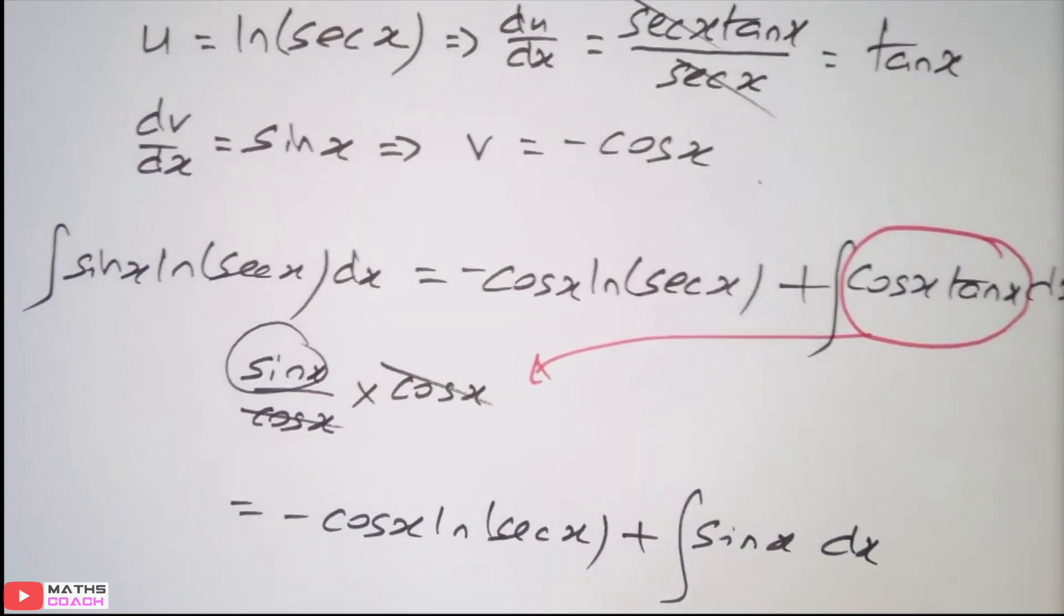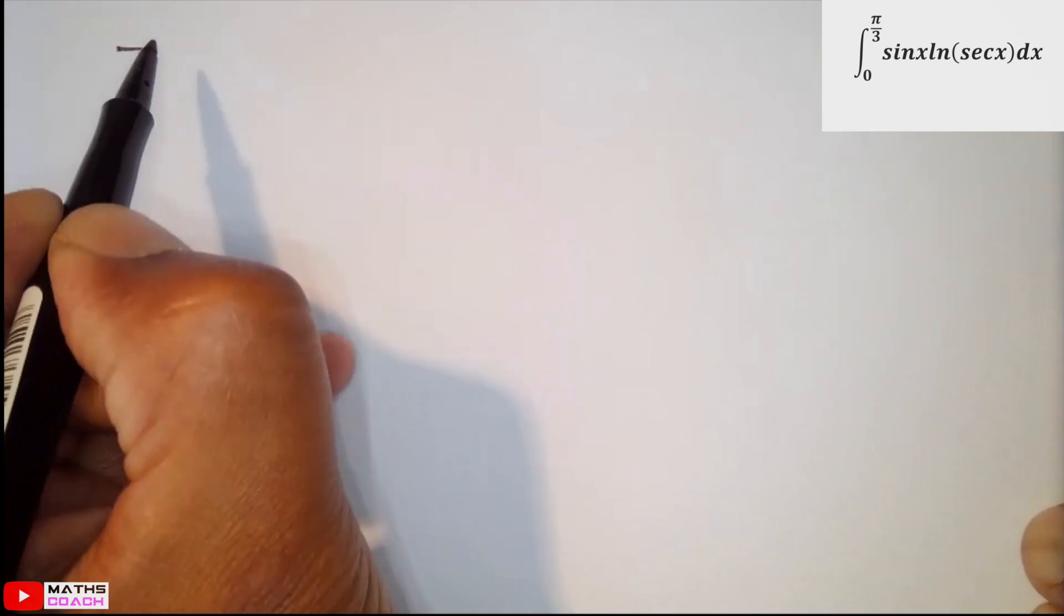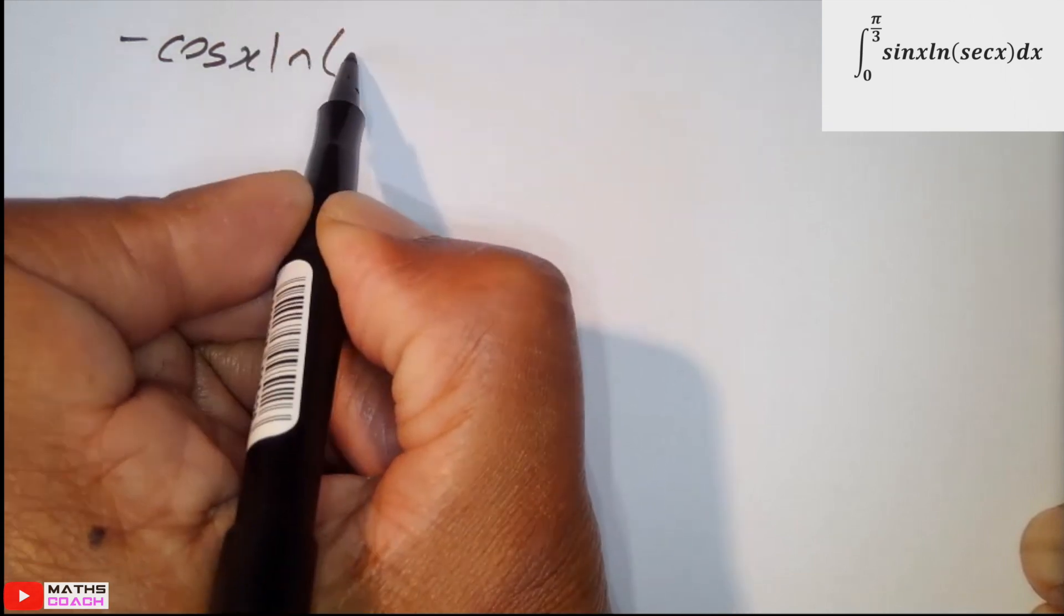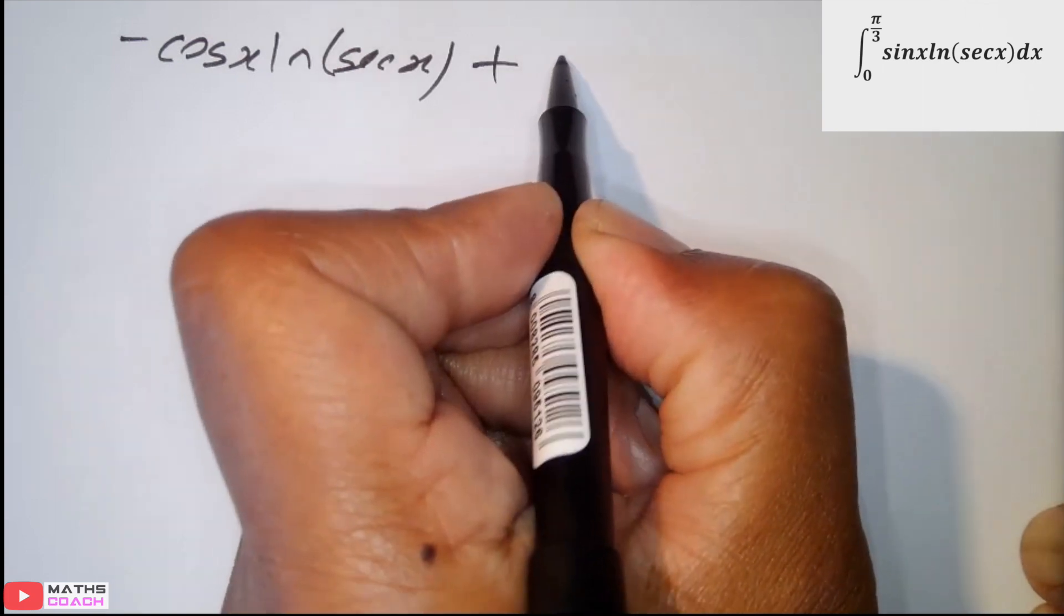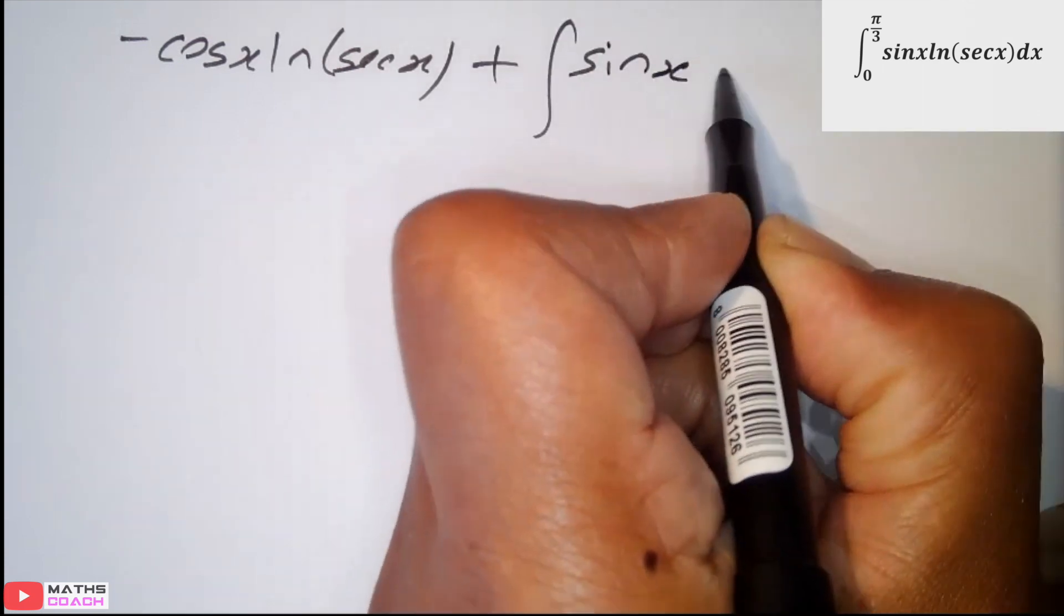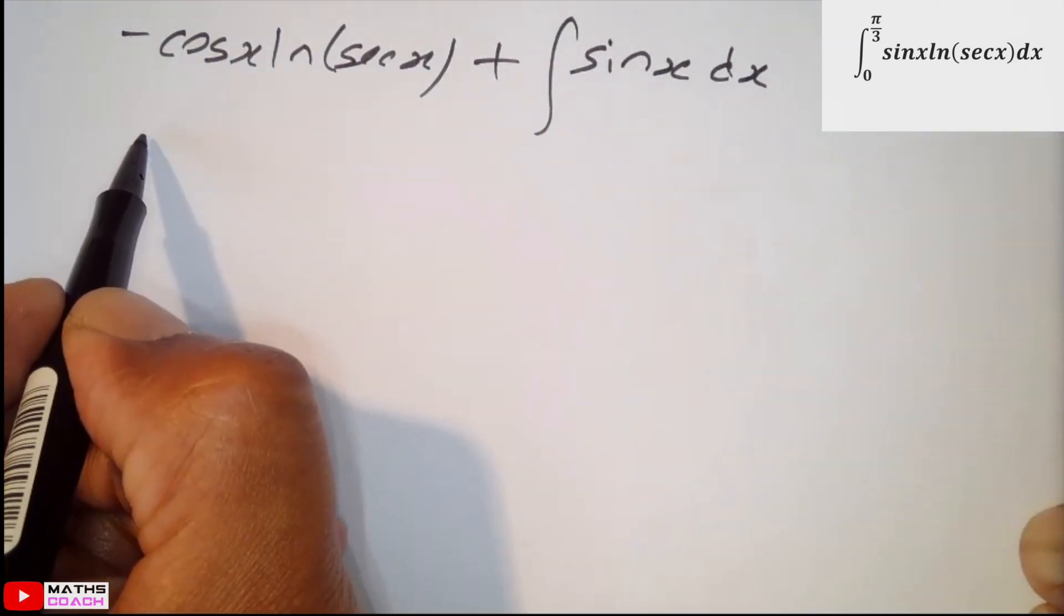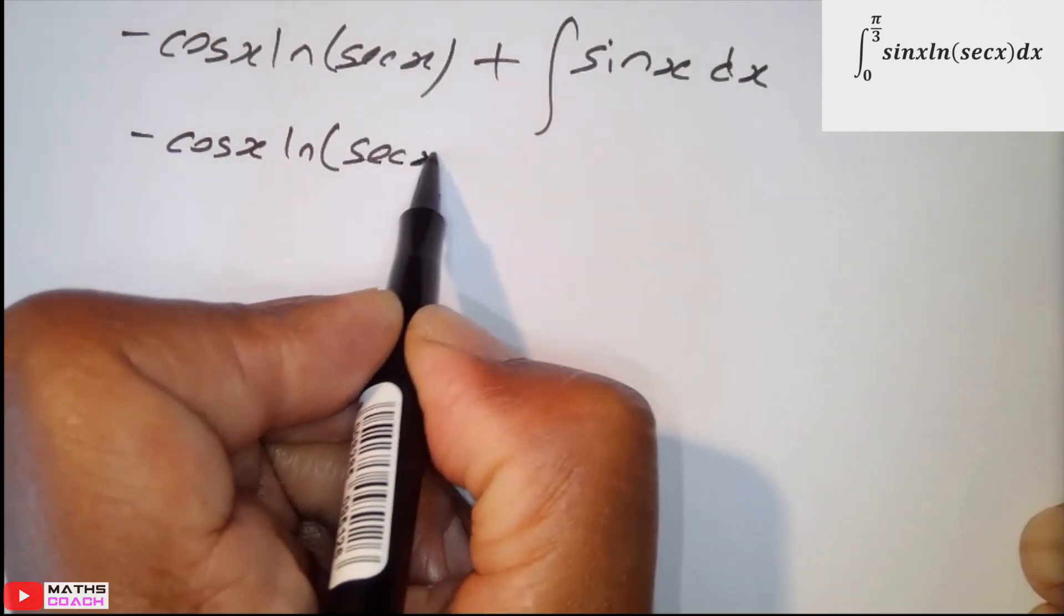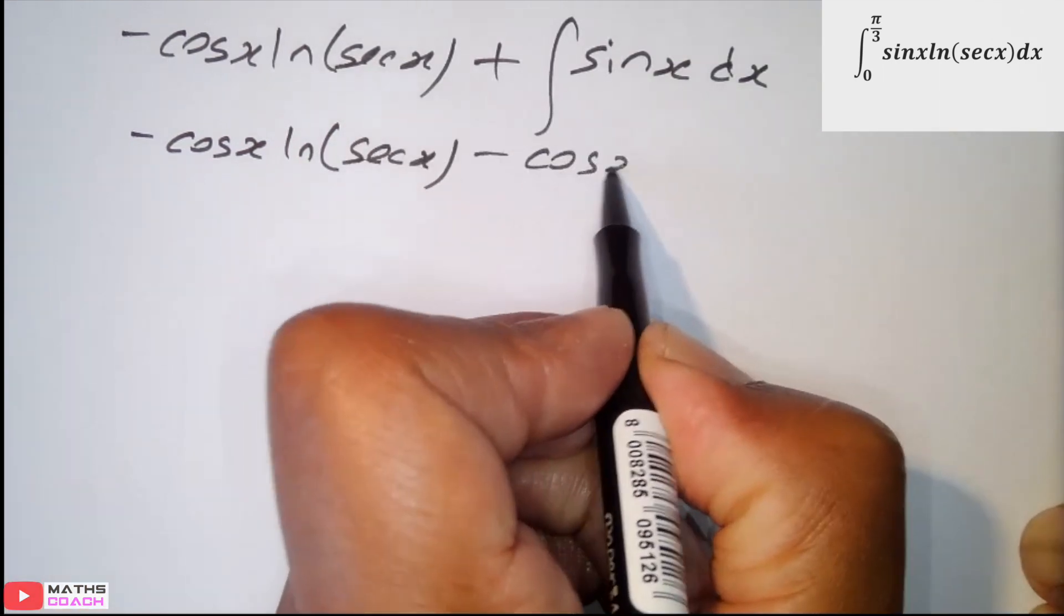Let's go towards our final few lines. We have so far negative cos x ln sec x plus the integration of sin x with respect to x. So, we can drop this negative cos x ln sec x. Integration of sin x is negative cos x. And I think that is now ready to plug in with our limits.